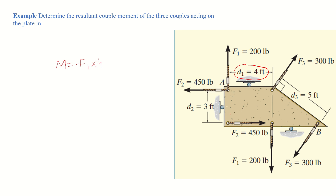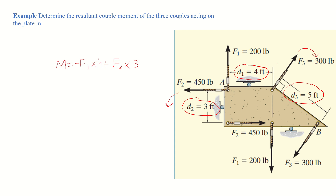F2 is opposite in direction but equal in magnitude, and it is separated by 3 feet. It rotates the plate in the anti-clockwise direction, so it carries a positive sign, equal to F2 multiplied by 3 feet. The third force F3 is 300 pounds, with the second force also 300 pounds but opposite in direction, separated by 5 feet, producing a moment in the clockwise direction — so a negative sign is applied.